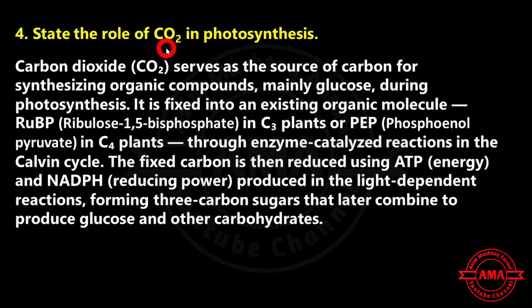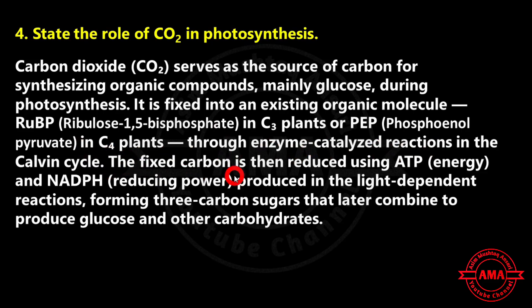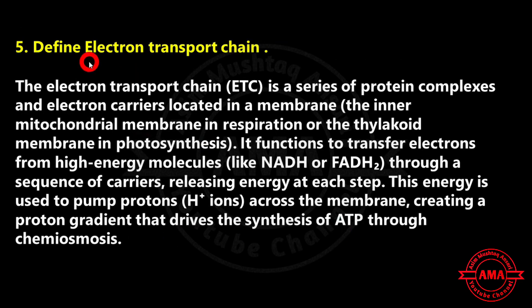In contrast, the oxygen atoms incorporated into glucose are derived from carbon dioxide during the Calvin cycle through carbon fixation and reduction. Next: state the role of carbon dioxide in photosynthesis. Carbon dioxide serves as the source of carbon for synthesizing organic compounds, mainly glucose, during photosynthesis. It is fixed into an existing organic molecule — Ribulose 1,5-bisphosphate in C3 plants, or PEP (phosphoenolpyruvate) in C4 plants — through enzyme-catalyzed reactions in the Calvin cycle.